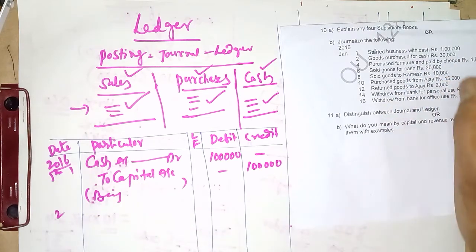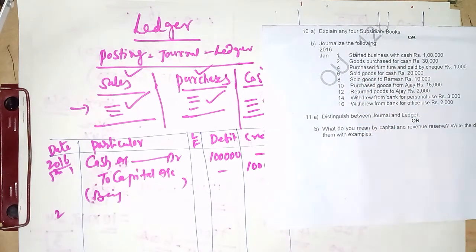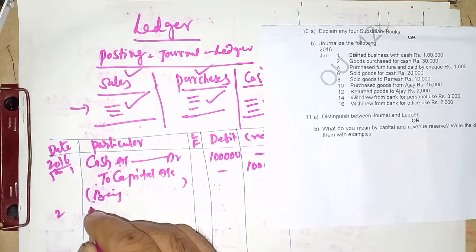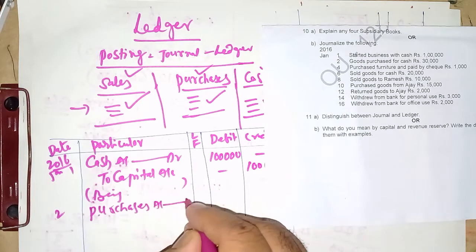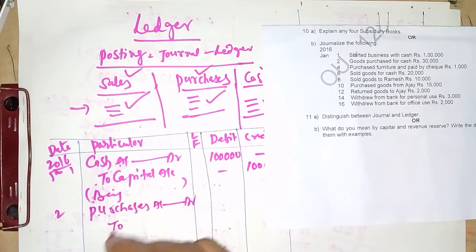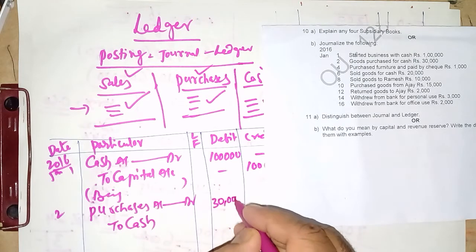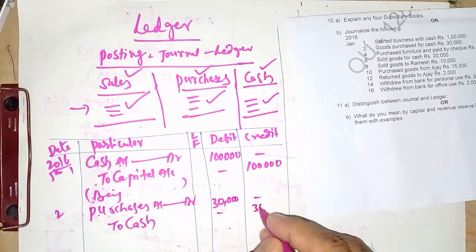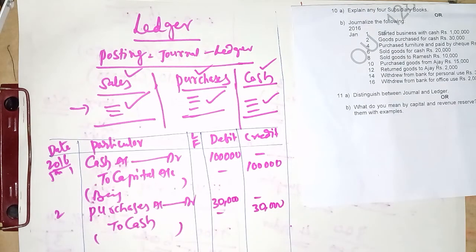The second transaction on the second day: goods purchased for cash. Whenever we purchase material it is recorded as Purchases Account debit, to Cash Account — how much? 30,000. So cash is going out. The second entry is posted. I am taking up the journal again to make the ledger better understood, since ledger is a continuation of journal.